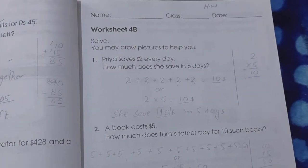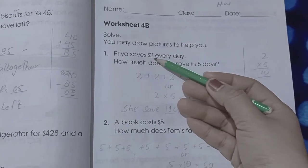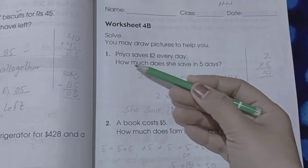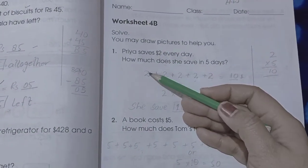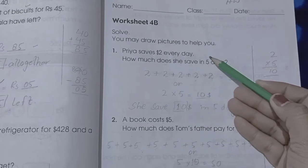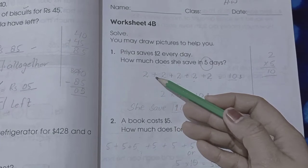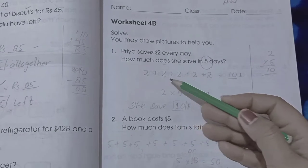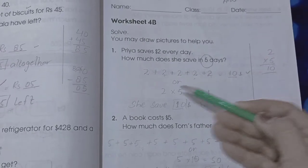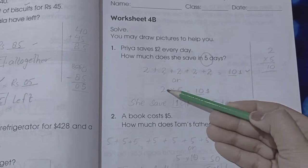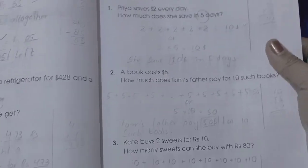Worksheet 4B. Write your name, class, and date. Page number 39. Here again we can draw pictures. Priya saved $2 every day. How much does she have saved in five days? Simply we write two, two, two, two, five times. Two plus two is four, four plus two is six, six plus two is eight, eight plus two is ten. Or we simply multiply 2 times 5 is 10. She saved $10 in five days.